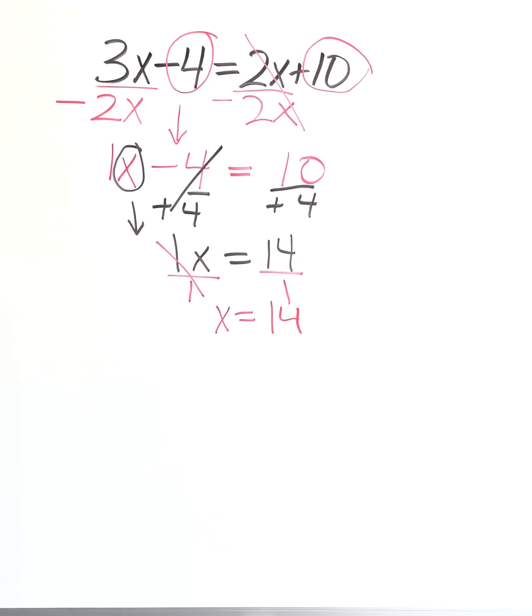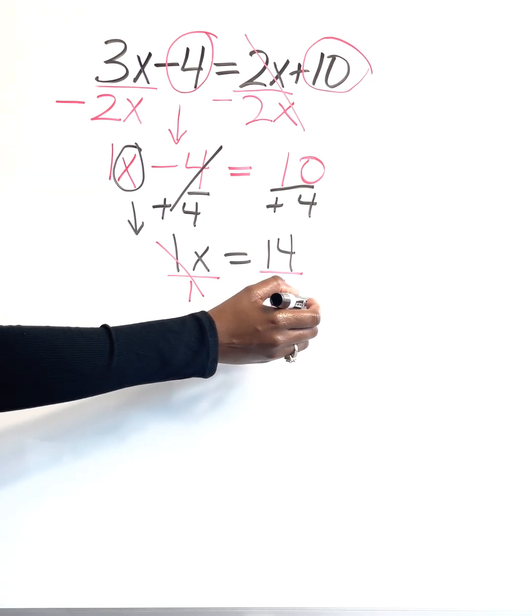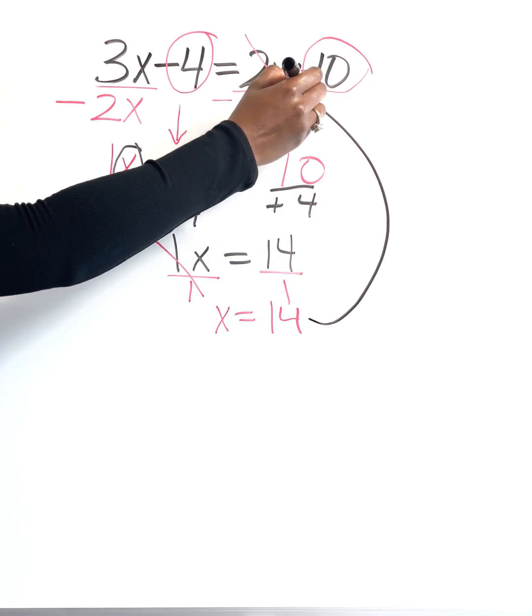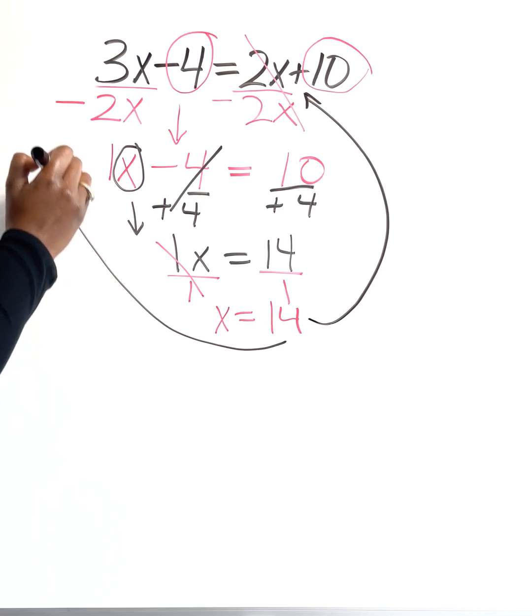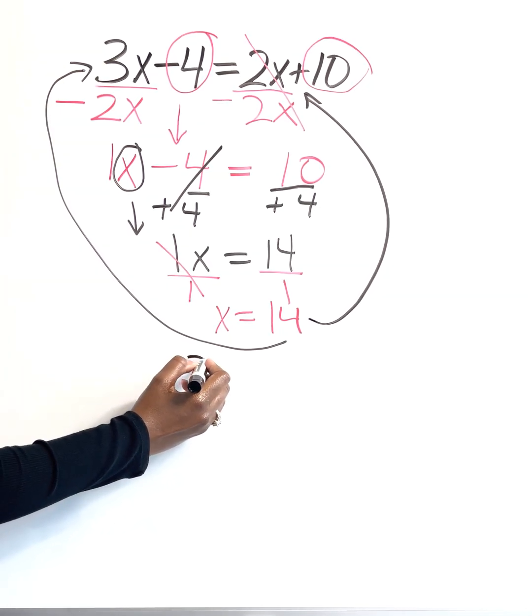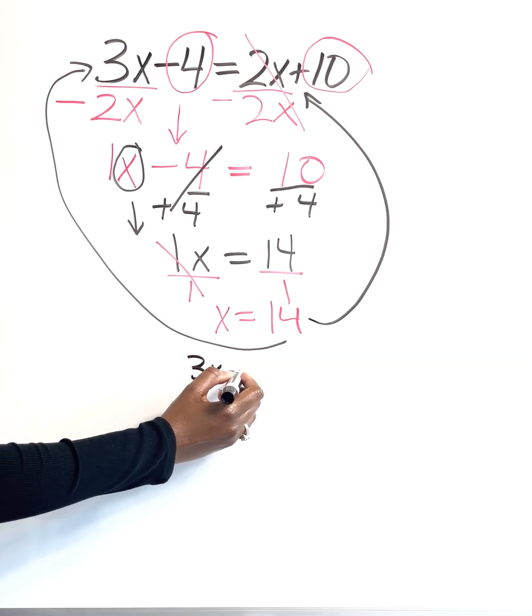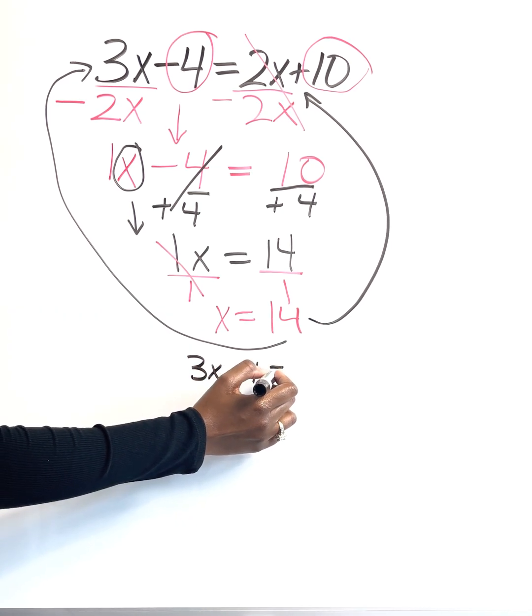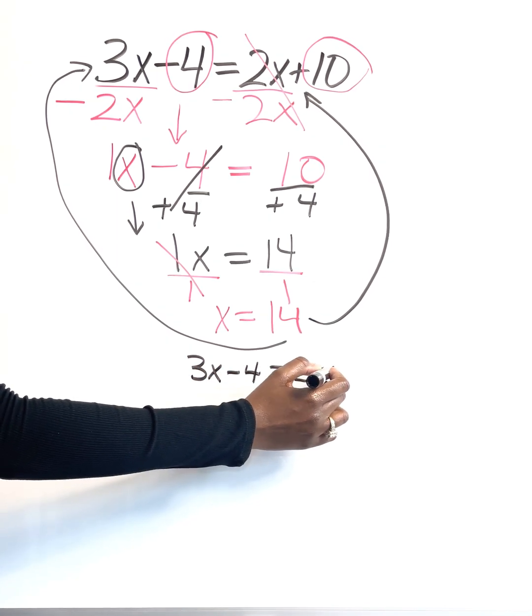So we're going to take this 14 and we are going to plug it back in where we have both of our variables. I'm going to go ahead and simplify. So we have 3x minus 4 is equal to 2x plus 10.